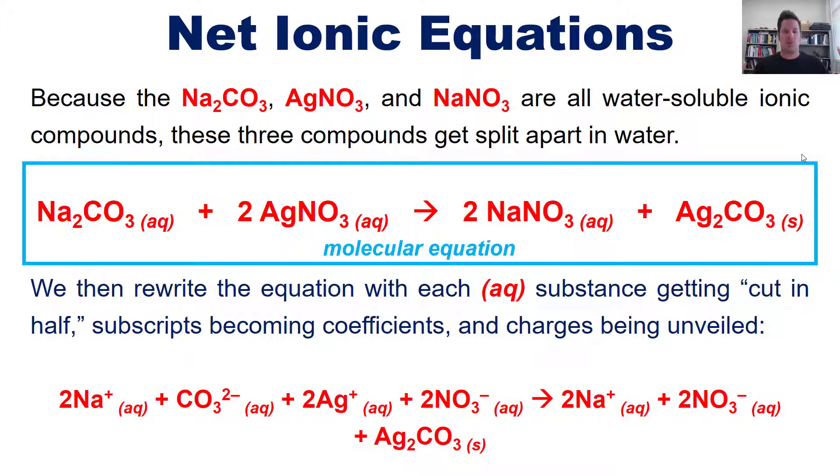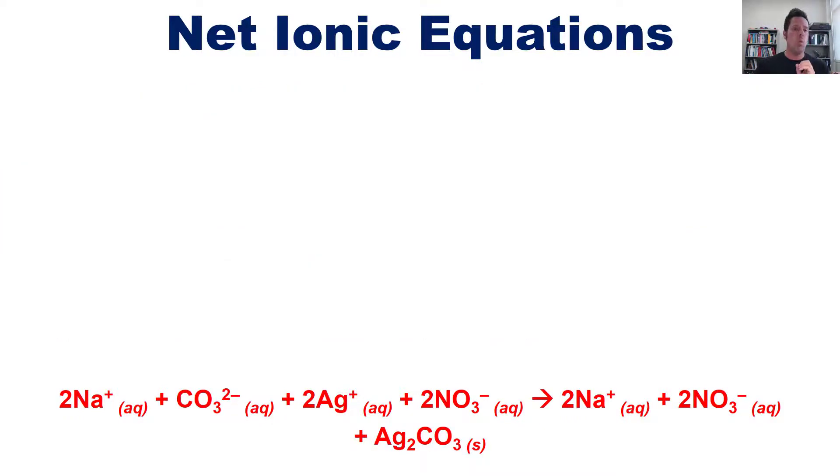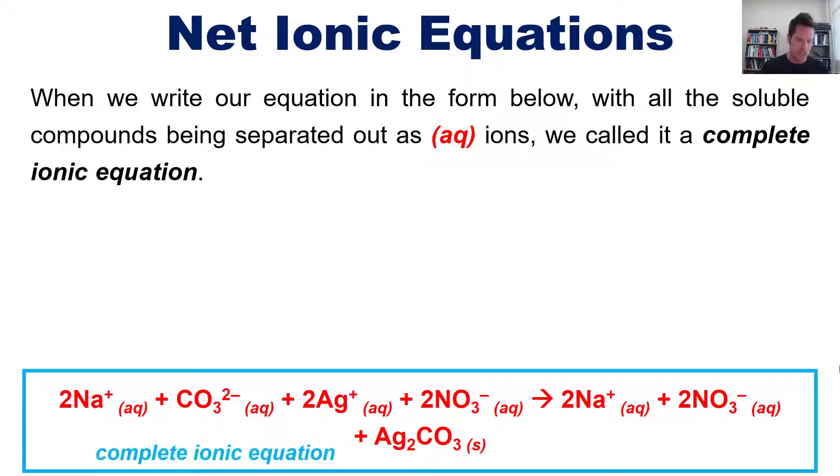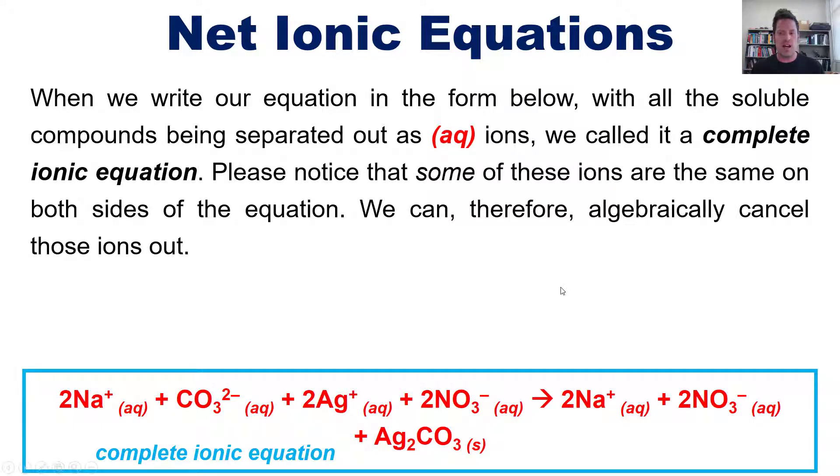Now, when we write out our equation in the form shown down here, with all of the soluble compounds being separated out as aqueous ions, we call it the complete ionic equation. We see all of the ions written out completely. Please notice that some of these ions are the same on both sides of the equation.